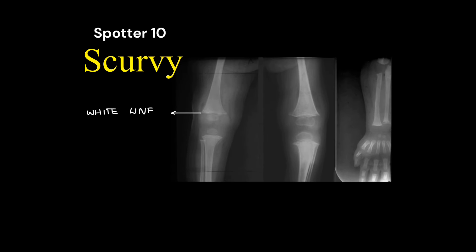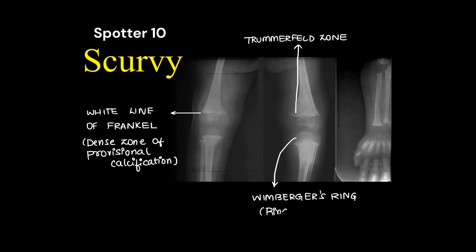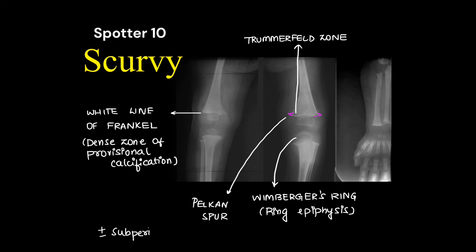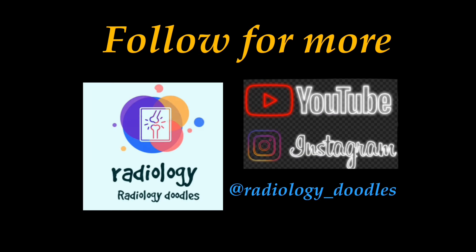One of the most commonly given spotters is a scurvy X-ray in pediatrics. There is the white line of Frankel, or dense zone of provisional calcification in the metaphysis. Underlying that is a lucent line called the Trümmerfeld zone. The epiphysis has a sclerotic ring called Wimberger's ring sign. The spurs in the metaphysis are called Pelkan spurs. There may or may not be subperiosteal hemorrhages present in such cases.